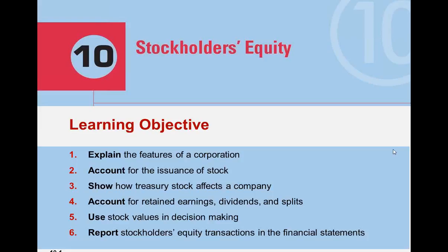The learning objectives in this chapter are to explain the features of a corporation, account for the issuance of stock, to show how treasury stock affects a company, to account for retained earnings, dividends, and splits, to use stock values in decision making, and to report stockholders' equity transactions in the financial statements.